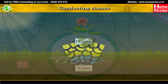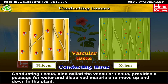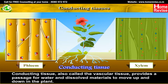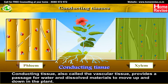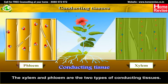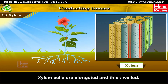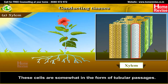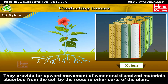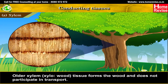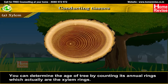Conducting tissue, also called vascular tissue, provides a passage for water and dissolved materials to move up and down in the plant. Xylem and phloem are the two types of conducting tissues. Xylem cells are elongated and thick-walled, somewhat in the form of tubular passages. They provide for upward movement of water and dissolved materials absorbed from the soil to other parts of the plant. Older xylem tissue — 'xylo' means wood — forms the wood and does not participate in transport. You can determine the age of a tree by counting its annual rings, which are the xylem rings.